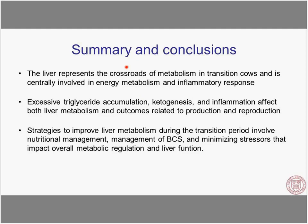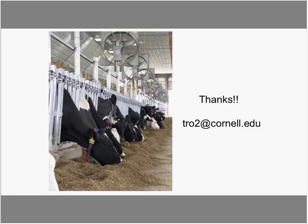In summary: the liver represents the crossroads of metabolism in transition cows and is centrally involved in both energy metabolism and inflammatory response. Excessive triglyceride accumulation, ketogenesis, and inflammation do affect both liver metabolism and outcomes related to production and reproduction. Strategies to improve liver function involve nutritional management, management of body condition score, minimizing stressors that impact overall regulation of metabolism, and targeted use of additives such as choline, methionine, and rumensin. Thank you to AMTS for your patience and for everyone for attending today.